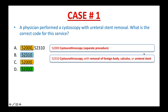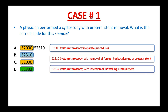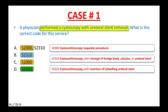CPT 52310: cystourethroscopy with removal of foreign body, calculus, or ureteral stent. Follow my tip and strategy — please highlight the main terms that uniquely describe the surgery or procedure. CPT 52332: cystourethroscopy with insertion of indwelling ureteral stent. I also highlight the main term or keyword for this code. After you are done highlighting the main terms to identify the key difference between each code, now is the time for you to read the procedure report.